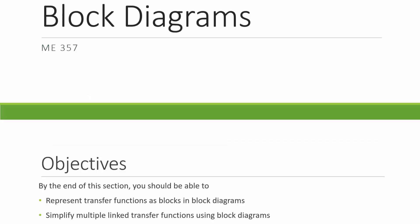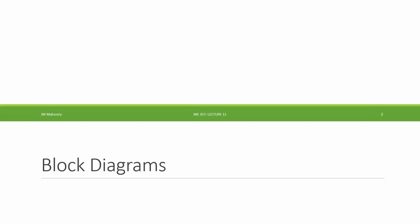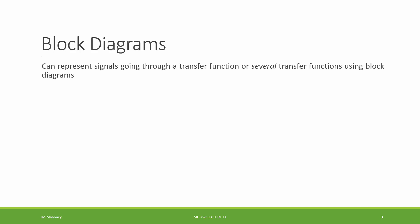Block diagrams. By the end of this section, you should be able to represent transfer functions as a block or several blocks in a block diagram, and you should be able to simplify and reduce multiple linked transfer functions using block diagram notation. A block diagram is a visual representation of a signal going through a transfer function or several transfer functions, linked together.